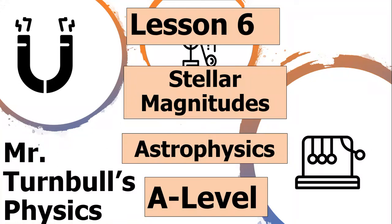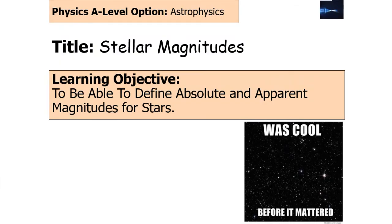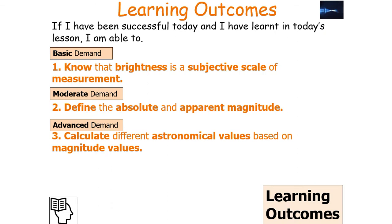Hello and welcome to today's lesson looking at stellar magnitudes, which forms part of the A-level astrophysics course. In today's lesson we're going to try and define the concepts of absolute and apparent magnitude for stars. We should know that brightness is a subjective scale of measurement, define the concepts of absolute and apparent magnitude, and calculate different astronomical values based on magnitude values.